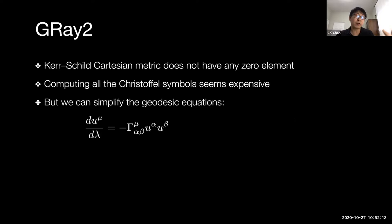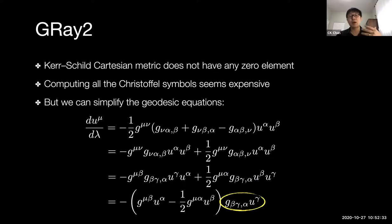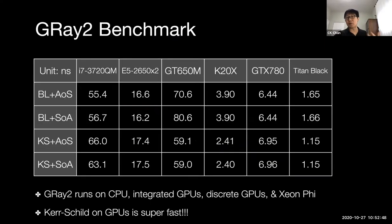Switching to Kerr-Schild coordinates may initially look like a bad idea because the formulation has more computation, but its uniformity is actually good for modern hardware. With some mathematical manipulation, the geodesic equations can be rewritten in a GPU-friendly form. After doing this work, the Kerr-Schild algorithm actually becomes faster than the Boyer-Lindquist algorithm, as shown in benchmark tables.